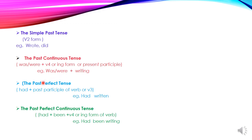Third, the past perfect tense. The general form is had plus past participle of the verb, or V3. You have to learn this general form very well, then only you can use the tense. Example: had written. We can say: he had written his notes; they had written their notes; he had finished his work; they had finished their work.